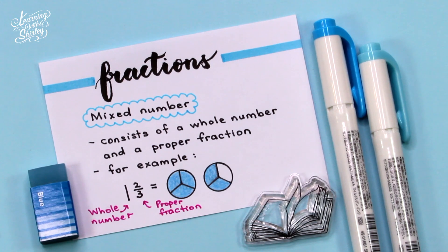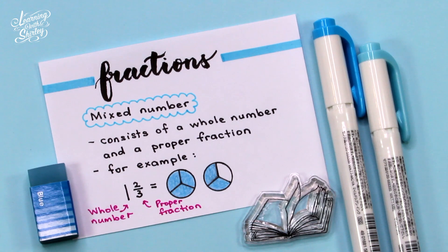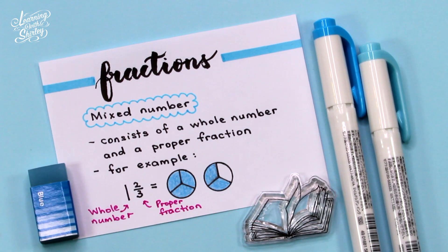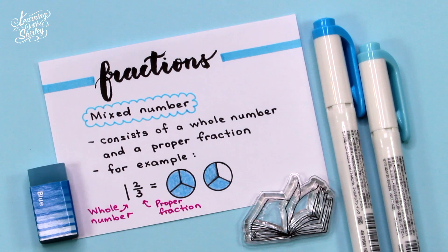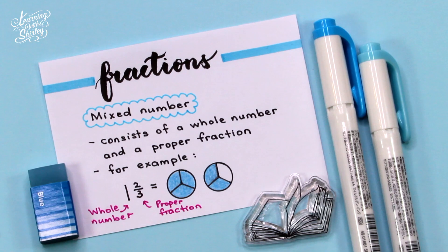What is a mixed number? A mixed number consists of a whole number and a proper fraction. For example, 1 and 2 over 3 is a mixed number, whereby 1 is the whole number and 2 over 3 is the proper fraction. Therefore, 1 and 2 over 3 is a mixed number.